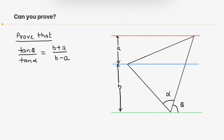The distance between the red and blue line is A, and the distance between the blue and green line is B. It is also given that the triangle makes an angle of theta with the green horizontal line, and alpha is one of the angles of the triangle. With this information we have to prove that tan theta over tan alpha equals to (B plus A) over (B minus A).